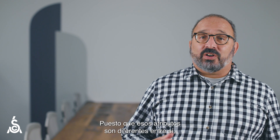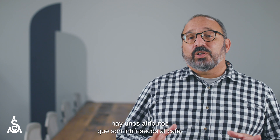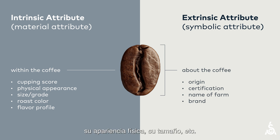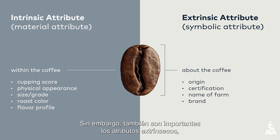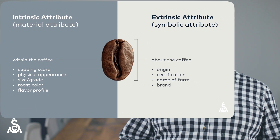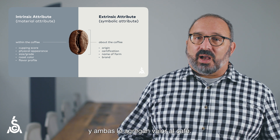Since these attributes differ, we can take another step in organizing them. Some attributes are intrinsic to the coffee and are a part of their material reality — this would include the flavor of the coffee due to its chemical makeup, its physical properties, grade, etc. But also important are the extrinsic attributes, which are usually information about the coffee, such as its country of origin, brand, or sustainability certification. Both categories of attribute are important, and both add value to the coffee.